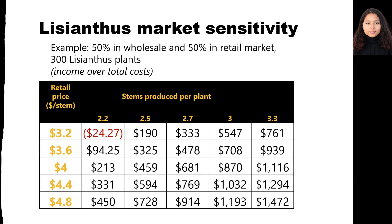Sensitivity analysis is important for producers to see the impact of different production sizes or selling prices on the enterprise. Lysianthus market sensitivity is analyzed to see the change in income due to market shock. In this table, we can see if the baseline production size of 2.7 stems per plant was decreased to 2.2 and the retail price of $4 was decreased to $3.20, the enterprise would be in a loss of $24, shown in red. But if the production size was increased to 3.3 stems per plant and retail price was increased to $4.80, the enterprise would give returns of $1,472 from 60 square feet.